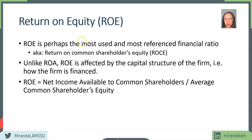ROE is affected by the capital structure that the firm chooses, meaning how much the firm uses debt versus equity. Since we are focused on common equity, the net income we use is net income available to common shareholders. The denominator is average common shareholders' equity.